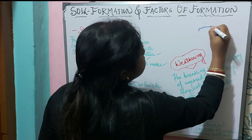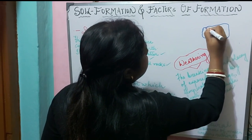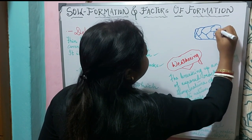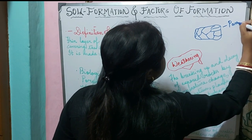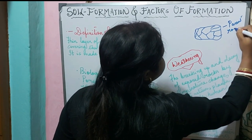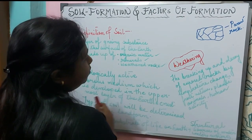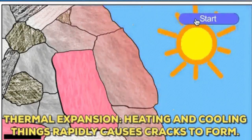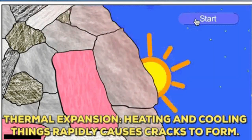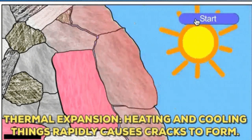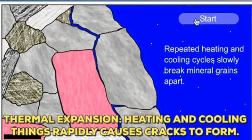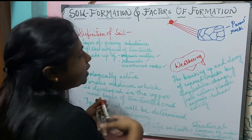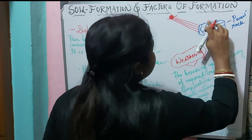Let us see how rocks get broken down due to weathering. This chunk of rock — we can also call it the parent rock or the main rock. During the daytime, due to the rays of the sun, the rock expands, and during the night it contracts.